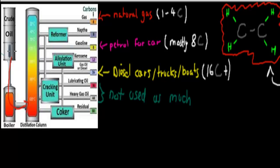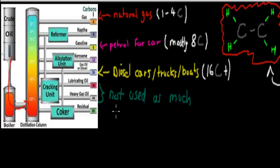So we get crude oil, we heat it, and we get different components. For example we get some gas ones — natural gas. We get gasoline for our cars, so petrol. We get diesel, which we can use in cars, trucks and boats. We also get other ones such as your residual and your heavy gas oils, which are often not used that often.